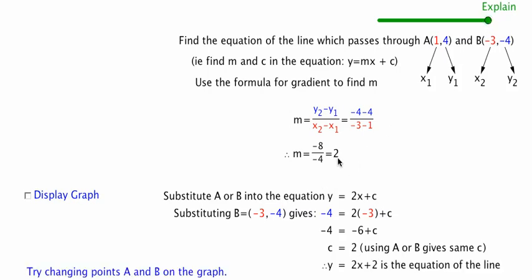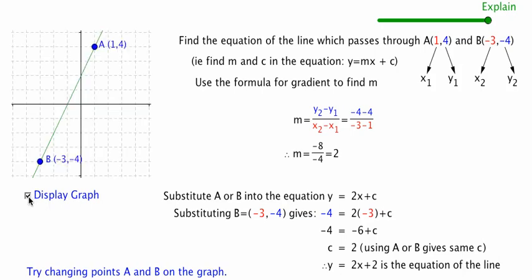We've now found both m and c — in this case they're both equal to 2 — which means the equation of this line is y equals 2x plus 2. We can inspect that on the graph by clicking it. We can see the y-intercept is indeed 2, where the line crosses the y-axis. The slope is 2 because for every step to the right, we take 2 steps upward to stay on the line.